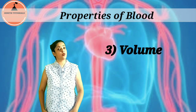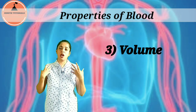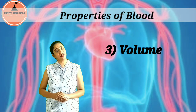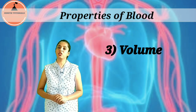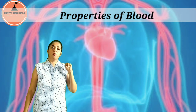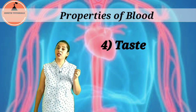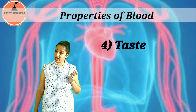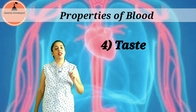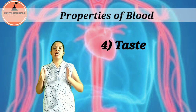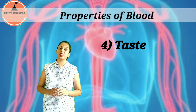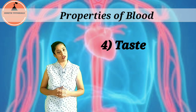The third property is its volume. An adult human body contains five to six liters of blood at any given time. The fourth property is its taste: blood is saltish in taste and has an alkaline nature — it is slightly alkaline with a pH of 7.3 to 7.45.